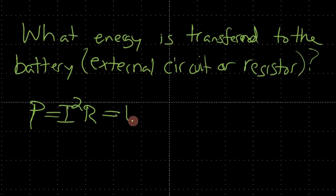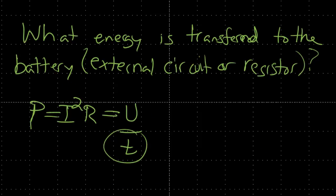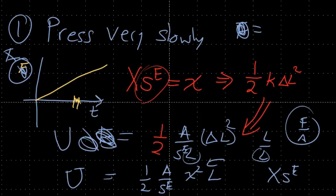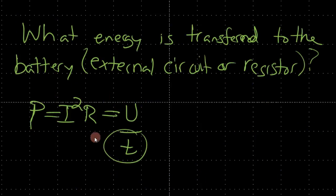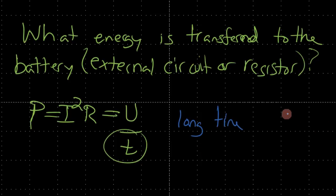We have to specify a certain time. In this case, the time is really long — for practical purposes, approximately infinity. For a really long time, the power is going to be about zero.